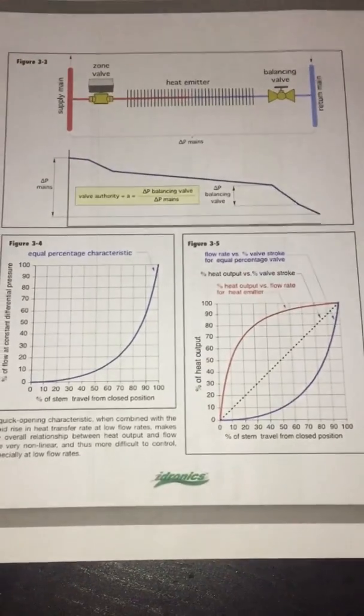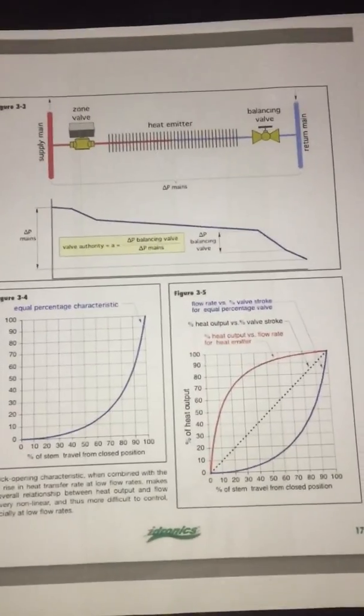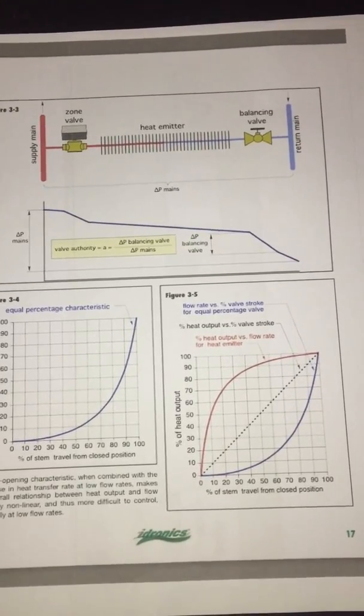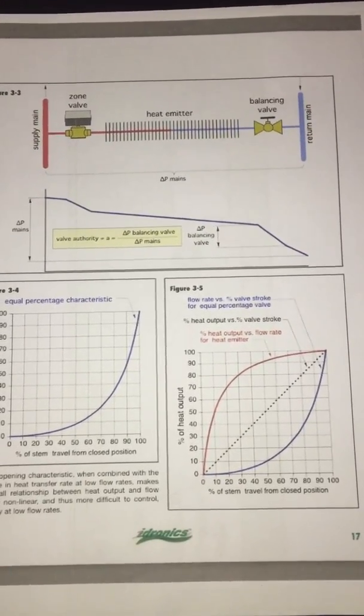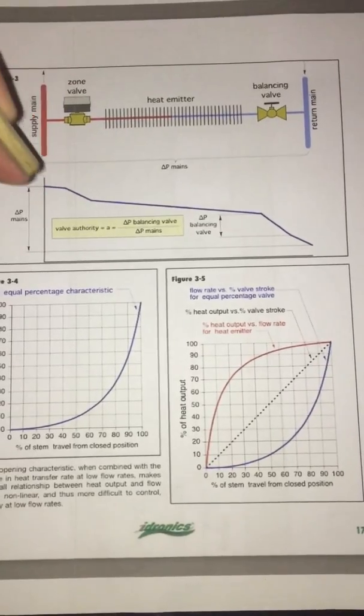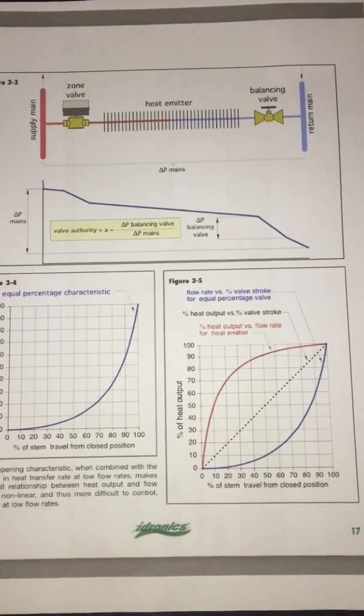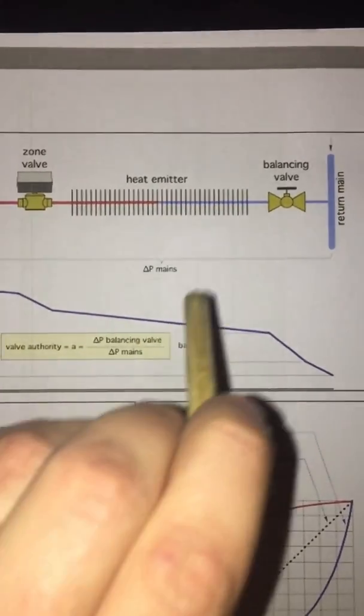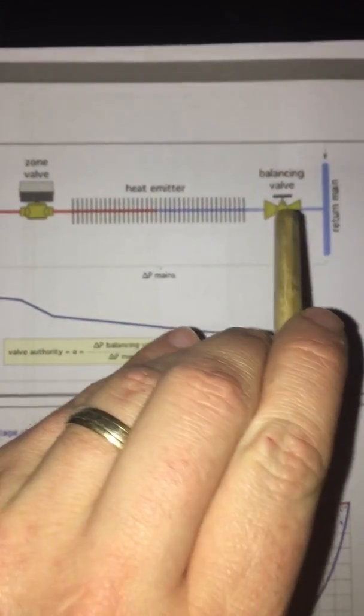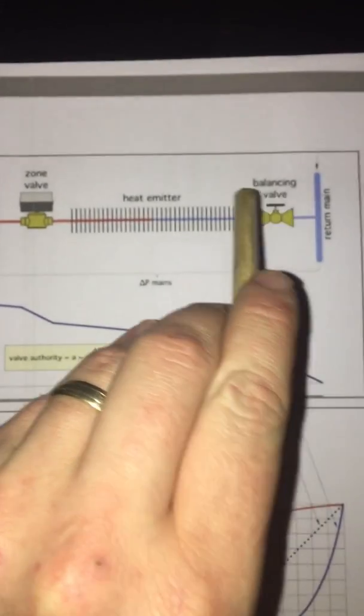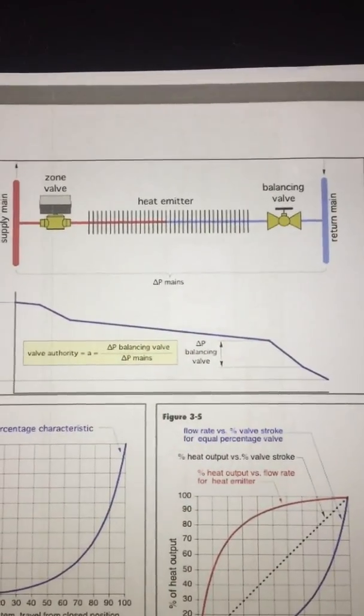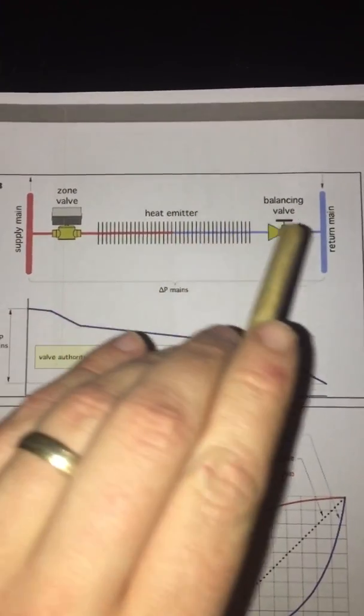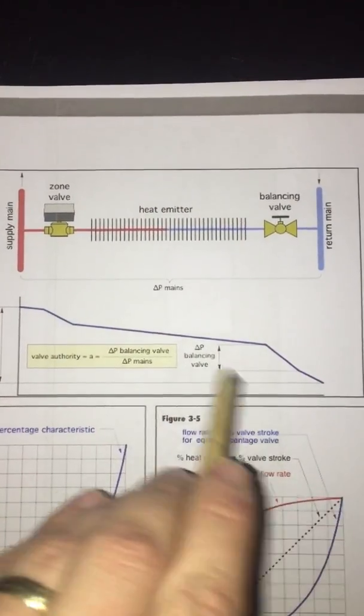So let's start with valve authority. When we're selecting a balancing valve or any valve that controls flow through a circuit, may also be a three-way rotary mixing valve, then we want it to have good authority which will mean good flow control. How we do that is we need a balancing valve which has a delta P differential pressure, pressure drop across the valve of around 20 to 50% of the total circuit it is controlling, including the valve.